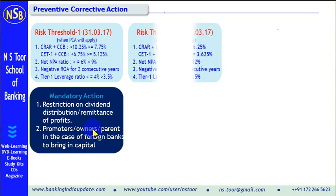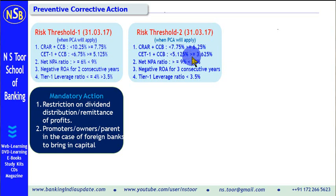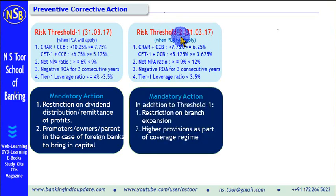Risk Threshold 2: The CRAR plus CCB level is less than 7.75% but still more than 6.25%. The net NPA ratio has moved to more than 9% but is still less than 12%. The negative return on assets is there for 3 consecutive years. The Tier 1 leverage ratio has fallen below 3.5% but is still more than 3.6%. In case of this threshold, mandatory actions include all those from Threshold 1, plus restriction on branch expansion, and the bank will be required to make higher provisions as part of its coverage ratio.